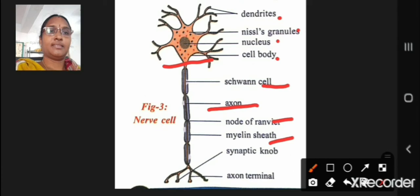The presence of myelin sheath helps us to find out the difference. And as I have already told, the nerve cell is a structural and functional unit of nervous system.